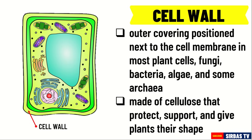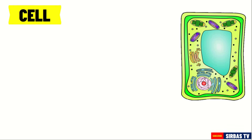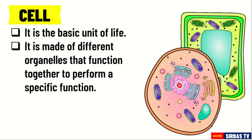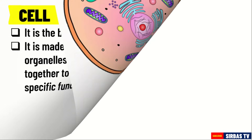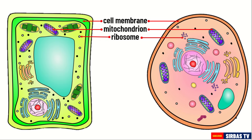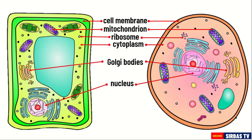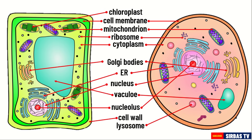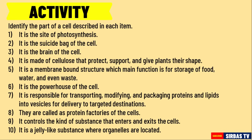And those are the different parts of a cell and their functions. In summary, the cell is the basic unit of life. It is made of different organelles that function together to perform a specific function. In our next video, we are going to learn the difference between a plant and animal cell. Let us have another look at the different parts of a cell, specifically plants and animals. To test your understanding of our lesson, please answer this short activity. You can check your answers at the end of this video.